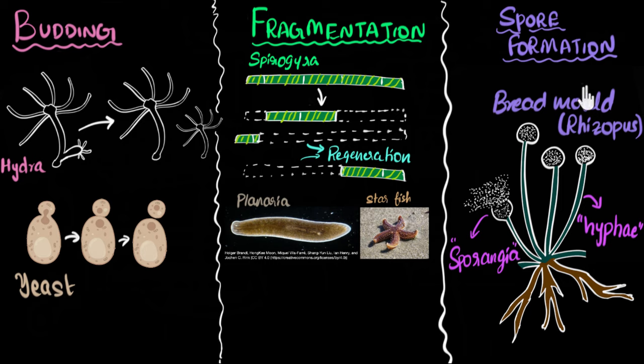And finally, in spore formation, the famous example of bread mold, what happens is when this thing matures, lots of spores are released into the air, and when the spores get a moist surface, each of them can start growing into a new bread mold.